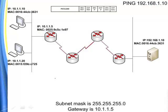Now we move away from just communicating over our local network. We want to ping something on our remote network. We're going long distance — we're going to ping 192.168.1.10, which is way across the country, so to speak. We want to hit that server. Computer A is going to ping 192.168.1.10.